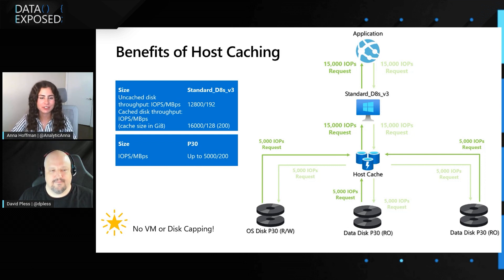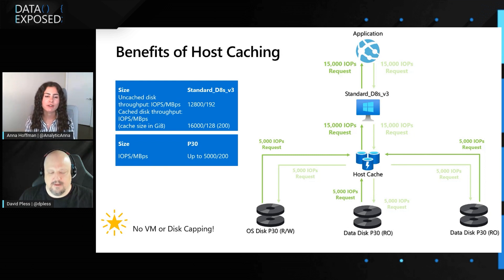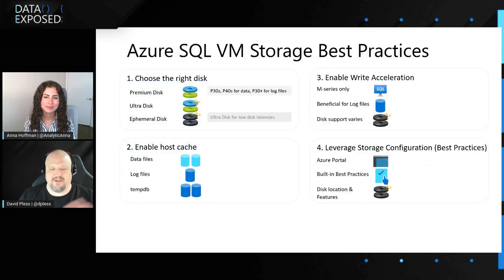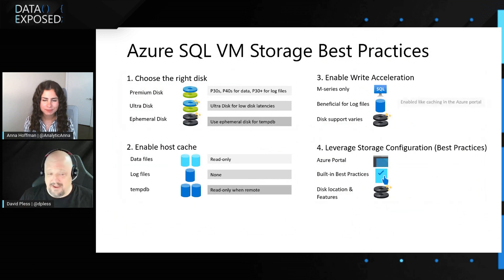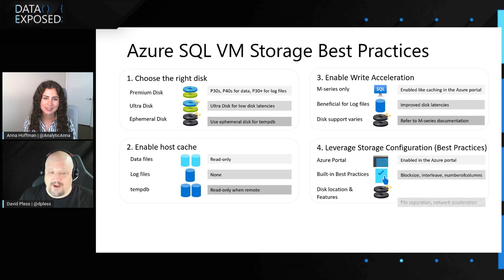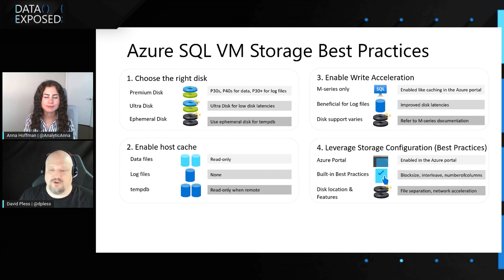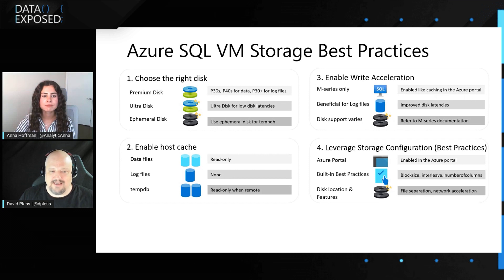These scenarios have been useful for understanding where to look and what you can do to limit throttling and take advantage of host caching. To wrap up with overall best practices: choose the right disk — we recommend premium SSDs because they are low latency, well-priced, and scalable with strong throughput. Premium SSDs can only be used with VM series that are premium storage compatible. You can use premium disks from P1 to P80, but some features are only available on certain sizes. We recommend using P30s and P40s for data disks. We only support caching for disks less than 4 terabytes. Since caching is not recommended for log files, you can use P30s up to P80s for the log disk, but we still recommend starting with P30s for both data and log files.